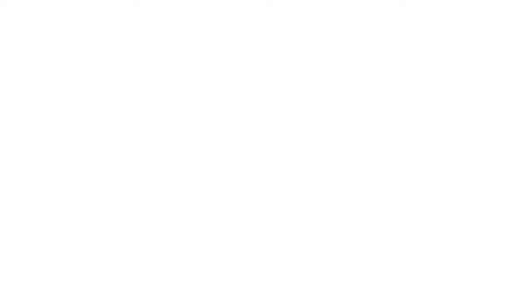The reason they're called pressure volume loops is because we graph them with pressure on the y-axis and volume on the x-axis — pressure volume loops, pressure over volume. Now this graph focuses on the left ventricle, so it's left ventricular pressure and left ventricular volume. When you hear somebody say pressure volume loop, what they're actually saying without really saying it is left ventricular pressure volume loop, because when we look at these loops we're doing that within the left ventricle specifically.